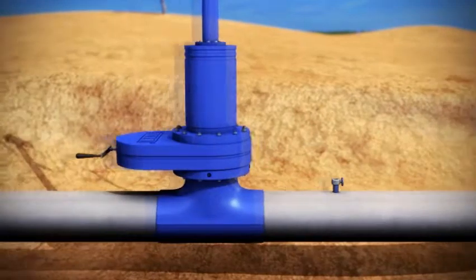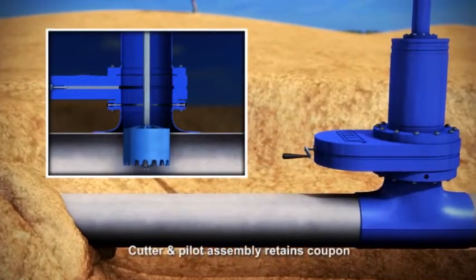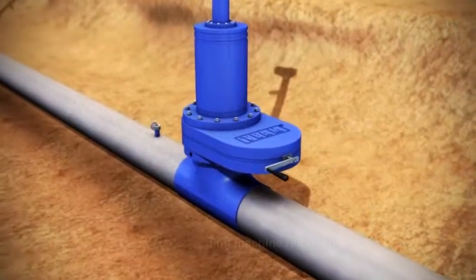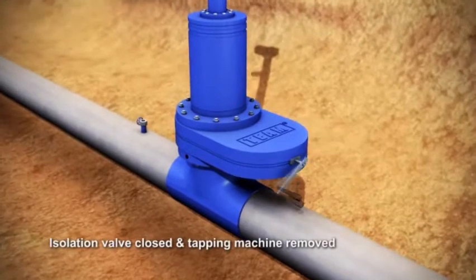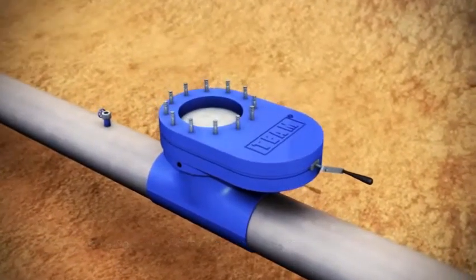Next, the hot taps for the line stop are made upstream and downstream. The cutter and pilot assembly penetrates the pipe, retains the coupon, and is retracted into the tapping machine housing. The isolation valve is closed, the tapping machine housing is depressurized, and the tapping machine removed.